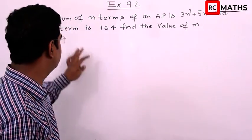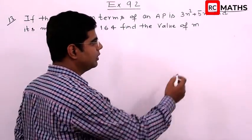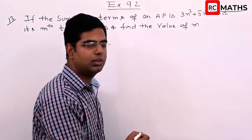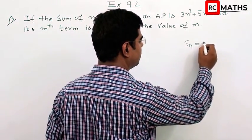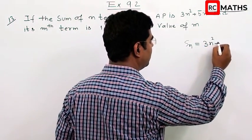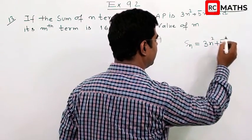Question 13: If the sum of n terms of an AP is 3n² plus 5n, so Sn is equal to 3n² plus 5n.